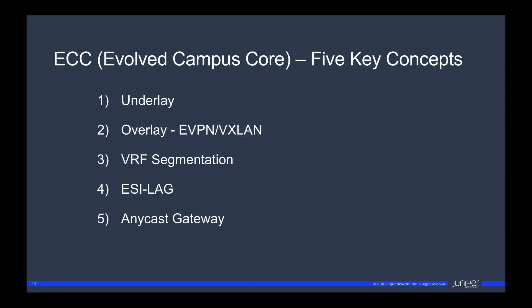Now let's talk about ECC — Evolved Campus Core — a bit more in detail. Here are the five key concepts of ECC: Underlay, Overlay, EVPN VXLAN, VRF Segmentation, ESI Lag, and Anycast Gateway. These are the five key concepts that I want to make sure everyone remembers and understands about the ECC framework.